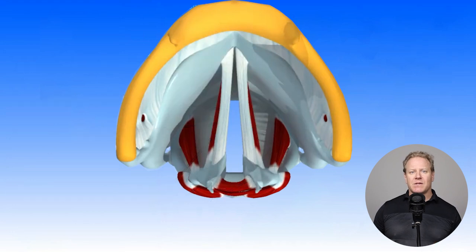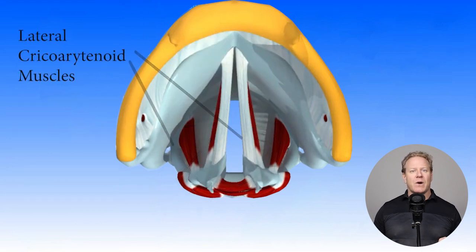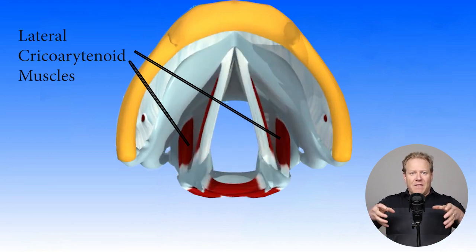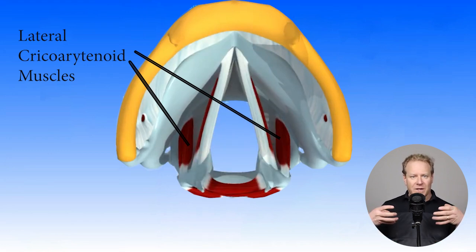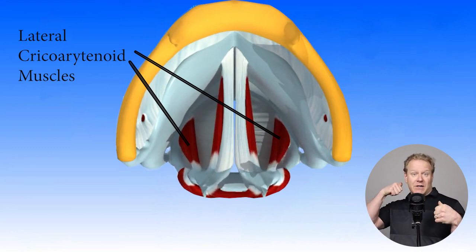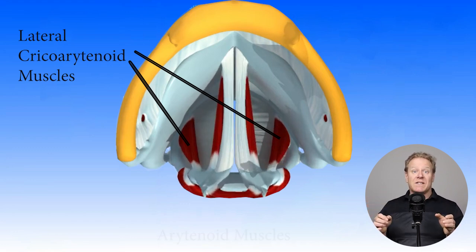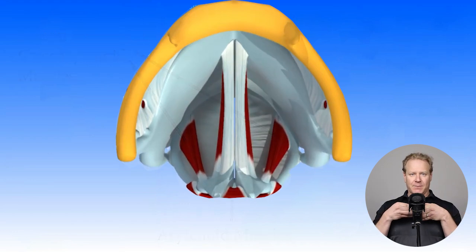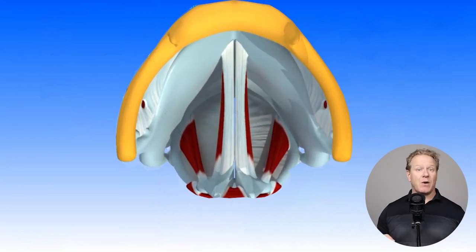These muscles right here are the lateral cricoarytenoid muscles, which, when contracted, pivot the arytenoid cartilages, stretching the vocal cords slightly in this direction while simultaneously adducting them.